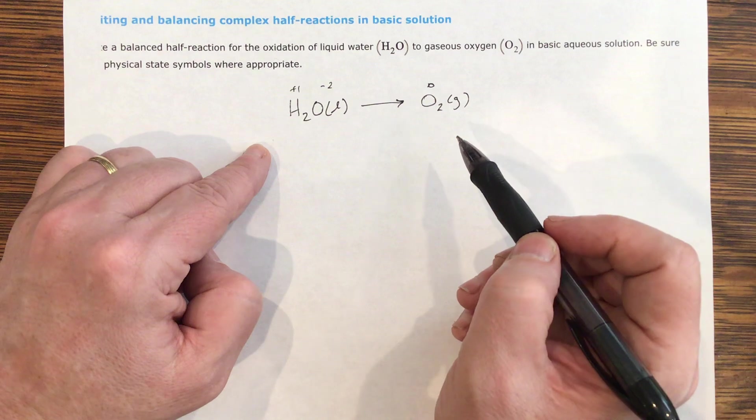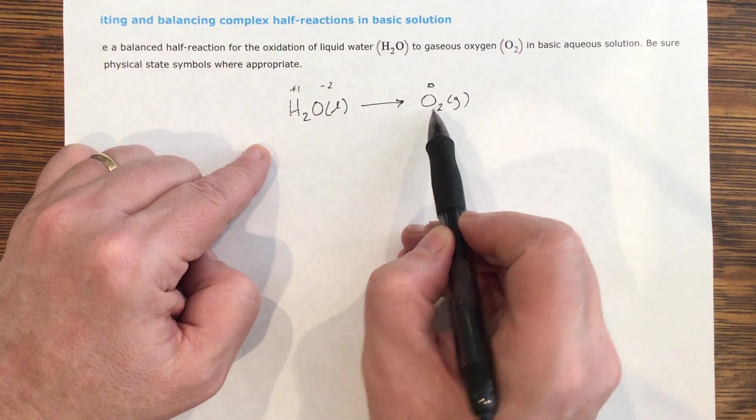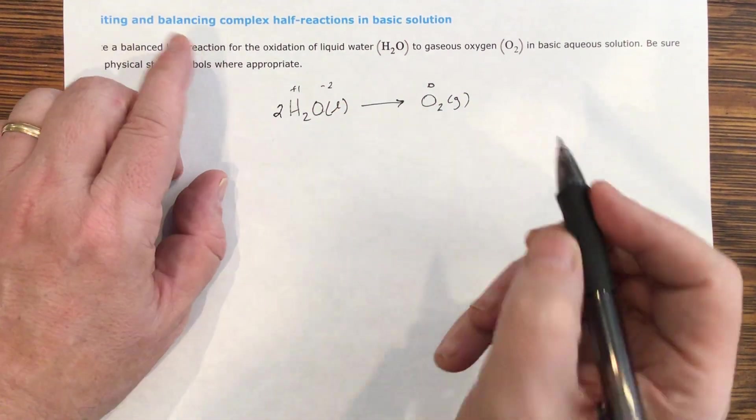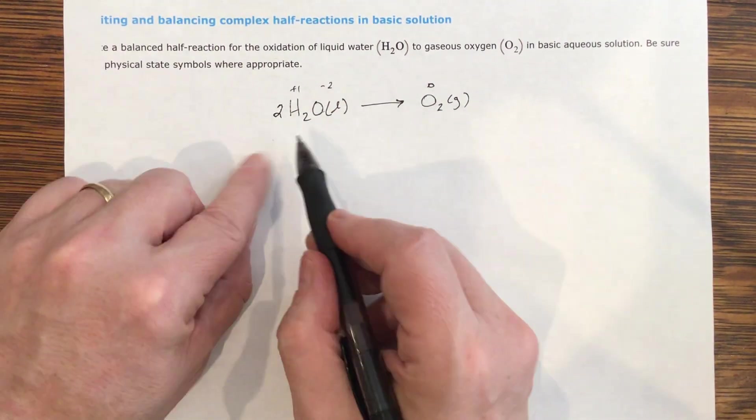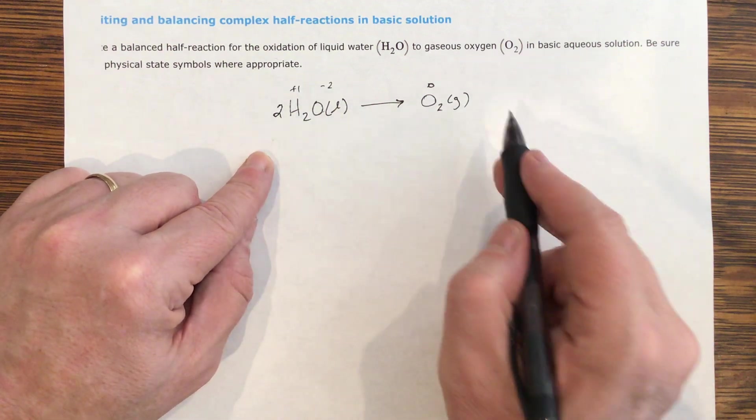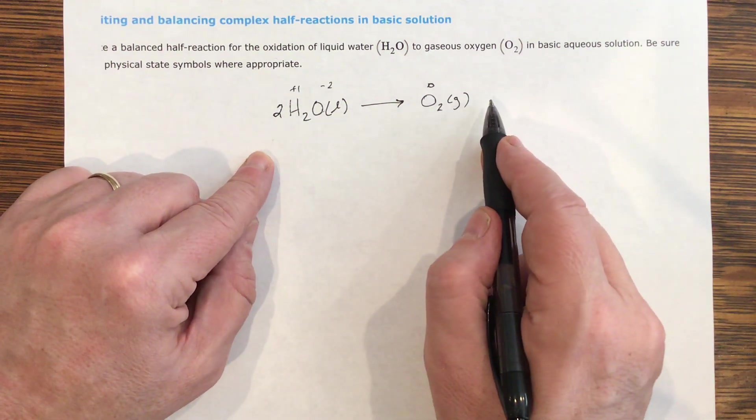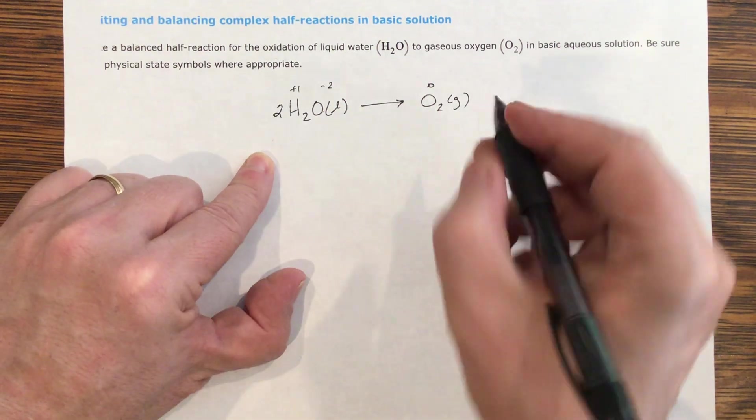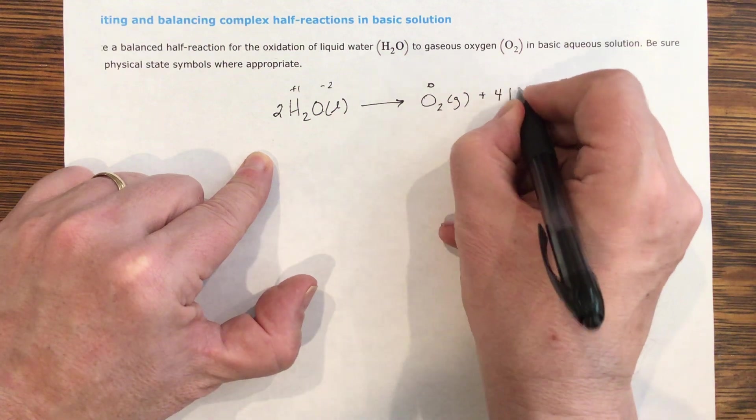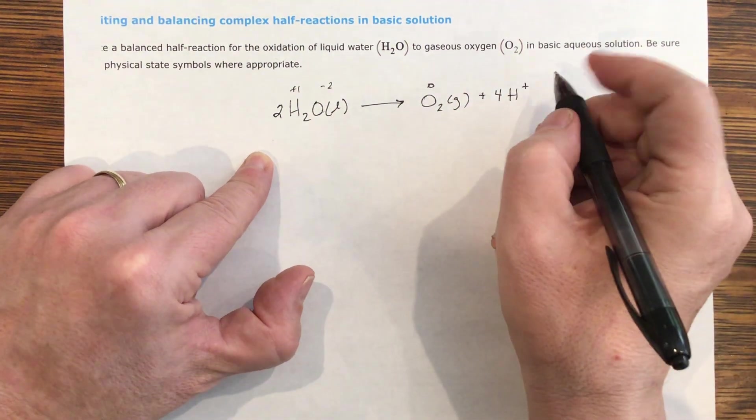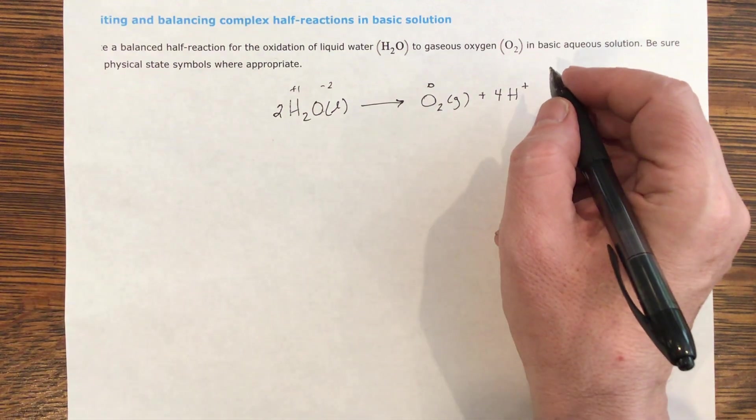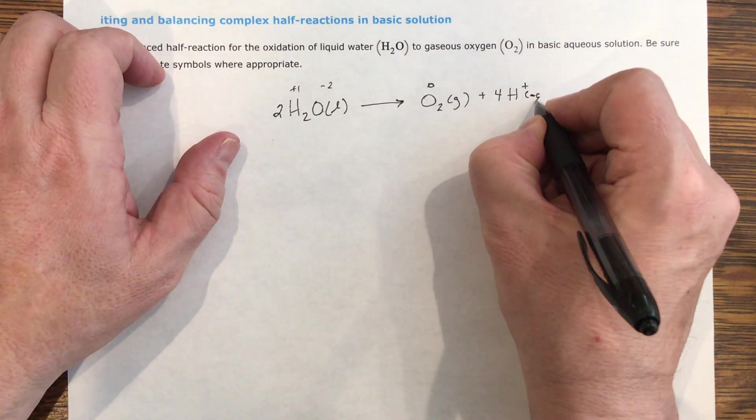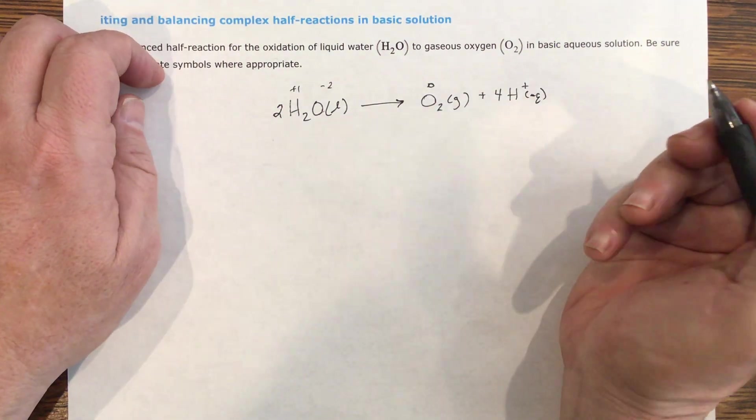Now, in order to balance everything, I've got two O's on this side and only one on this side. So this is just like normal balancing equations. I need two waters. But I've got four hydrogen protons on this side, but I don't have them on this side. So I need to write them. My oxygens are balanced, but now I have two times two. So on the other side, I'm going to write four protons, and I assume protons would be aqueous.